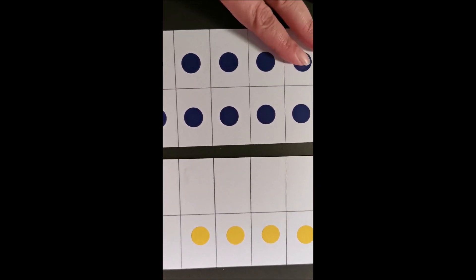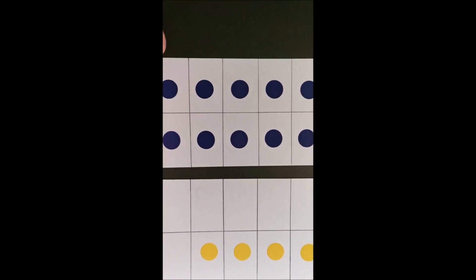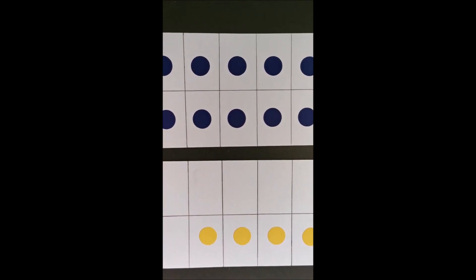That makes the tens place plus the ones place. So they see how place value would work. So 10 plus 4 becomes 14.